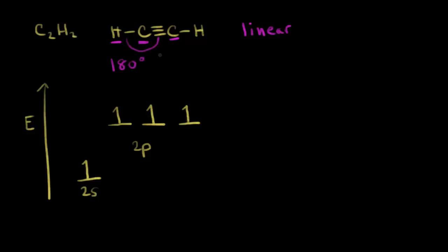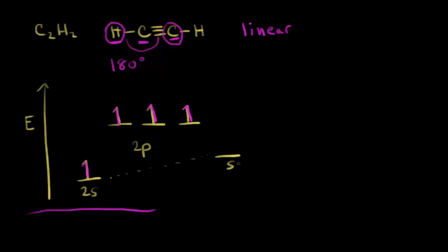We must have a different hybridization for this carbon — a different geometry, a different bond angle, and a different number of atoms bonded. To find our new type of hybridization, we look at the electron configuration already in the excited state. Carbon has four valence electrons in the excited state. We're looking for two hybrid orbitals since carbon is bonded to two atoms. So we're going to take one s orbital and one p orbital — only one p orbital this time — each with one electron.